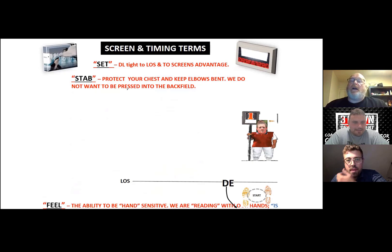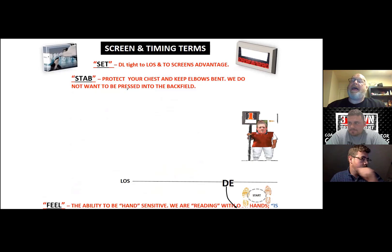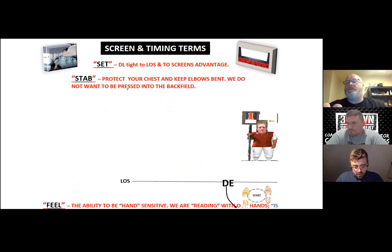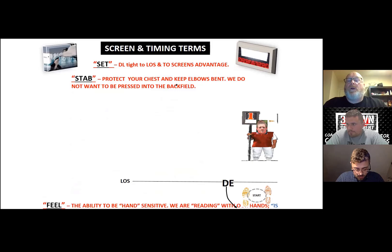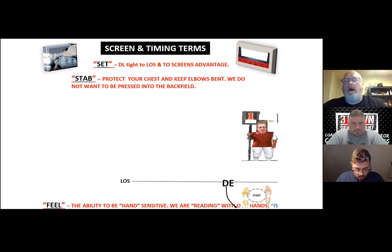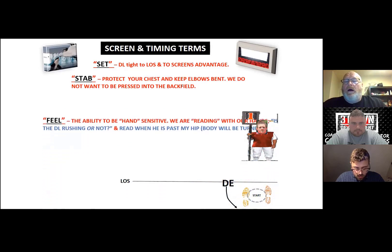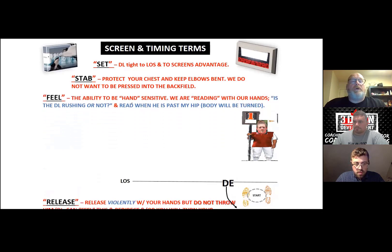On stab release, we want to protect our chest and keep our elbows bent when we stab. We want to protect our chest with our hands on all of our sets. We do not want to be pressed back into the backfield — that's going to keep us from releasing. When we do release, that guy should feel like he is beating our hip, not feel us releasing.